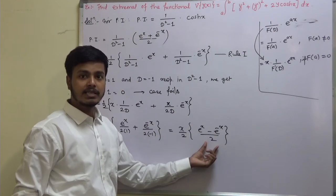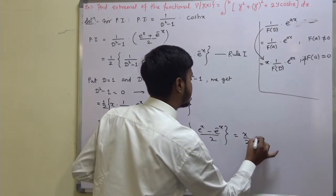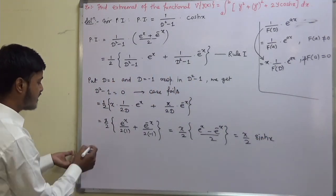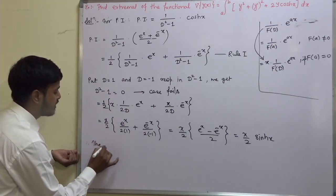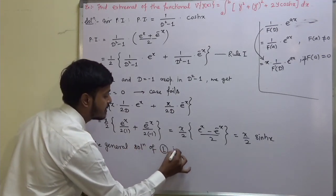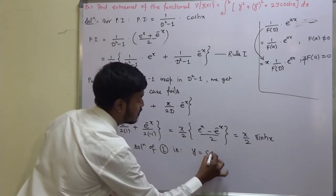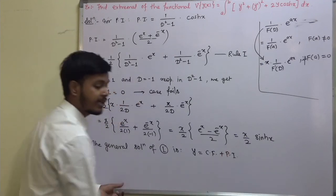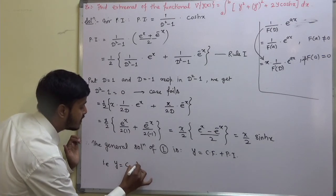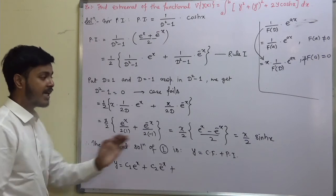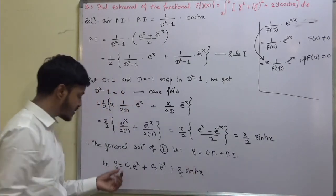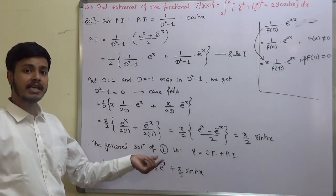We get PI equals (x/2) times (e^x minus e^(−x)), and (e^x minus e^(−x))/2 is the formula for sinh(x). Therefore PI equals (x/2) sinh(x). Now we can write the general solution of equation 1: y equals CF plus PI, that is y equals c1 e^x plus c2 e^(−x) plus (x/2) sinh(x).